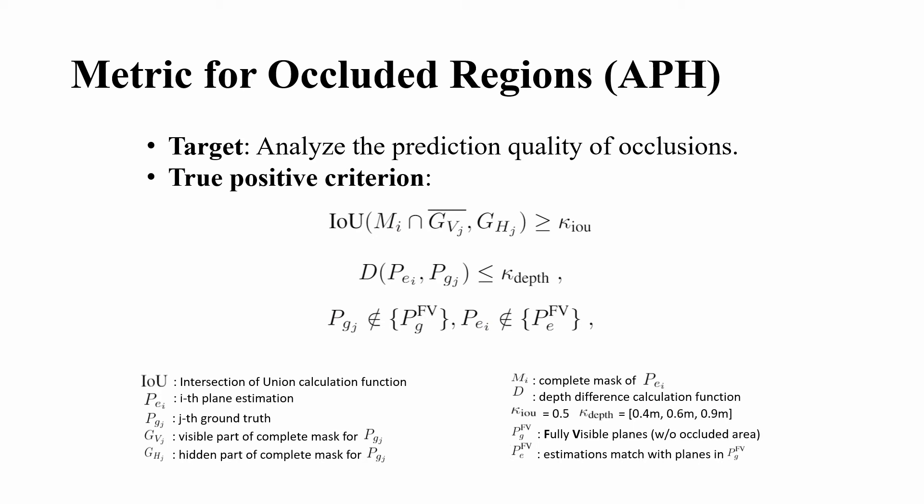Out-of-the-shelf metrics can only measure the overall plane prediction. Since we care more about the occluded area, we propose a new metric called APH. This metric can focus on the occluded region while evaluating, by excluding visible region prediction.